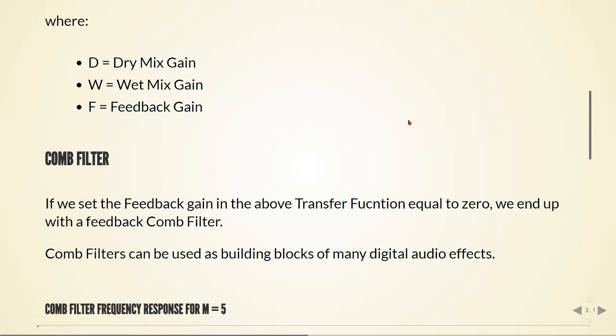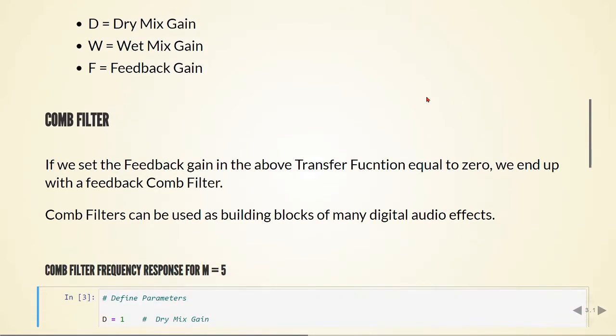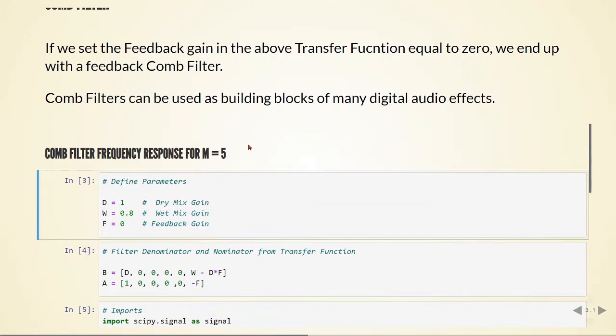Comb filters can be used as building blocks of many digital audio effects as well. So let's take a look at the frequency response of a comb filter, this time using m equals to 5.